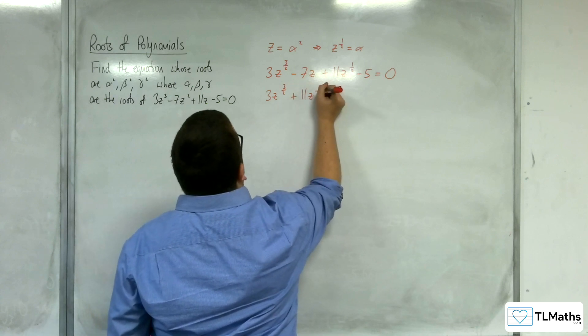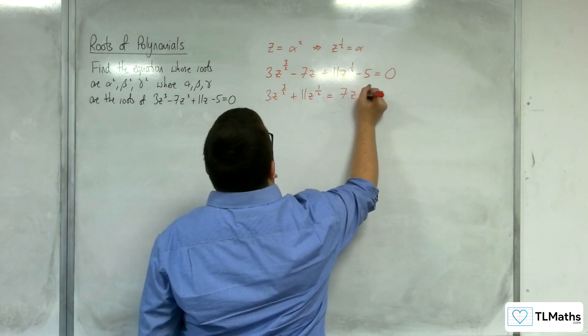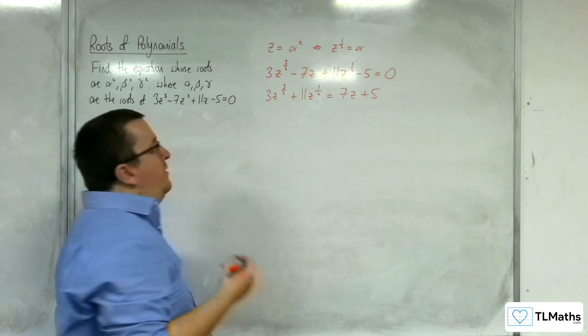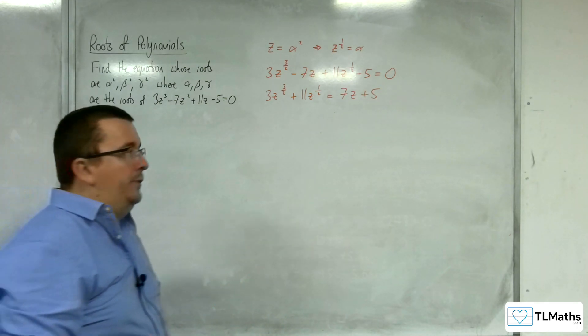rather than squaring this side and having to deal with all the values you're going to get, it would probably be easier if you move the 7z and 5 onto the other side first, and then square both sides.